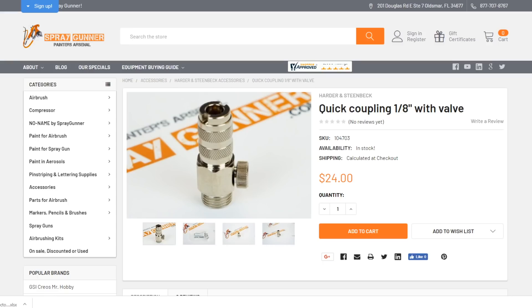This particular item is called a MAC valve or manual air control valve. They're hard to find good ones. Harder and Steenbeck have this one and it works. I don't own one right now but I really wanted one. It's a quick release 1/8 inch valve. Most airbrushes come with the fitting. This gives you more precise control instead of having to mess with your air compressor. It's $24, high-quality, and works really well.